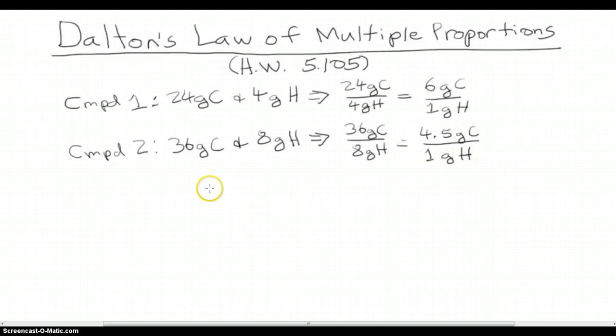Now, all we have to do to show that Dalton's law of multiple proportions is obeyed here is to take the ratio of the mass of carbon in compound one for every one gram of hydrogen to the mass of carbon in compound two for every one gram of hydrogen in that compound. So basically, we're just going to take 6 divided by 4.5.